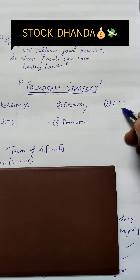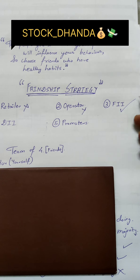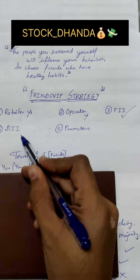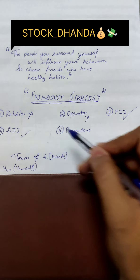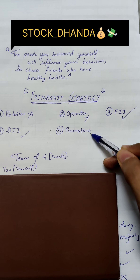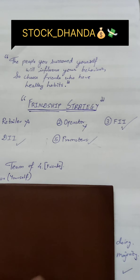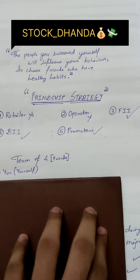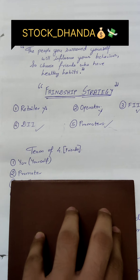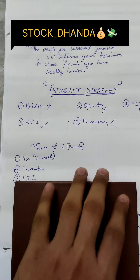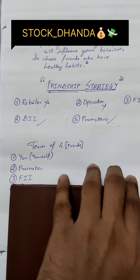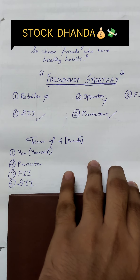So FII — yes. DII — yes. And promoter — yes. So our team of four will be: you yourself, promoter, FII, and DII.